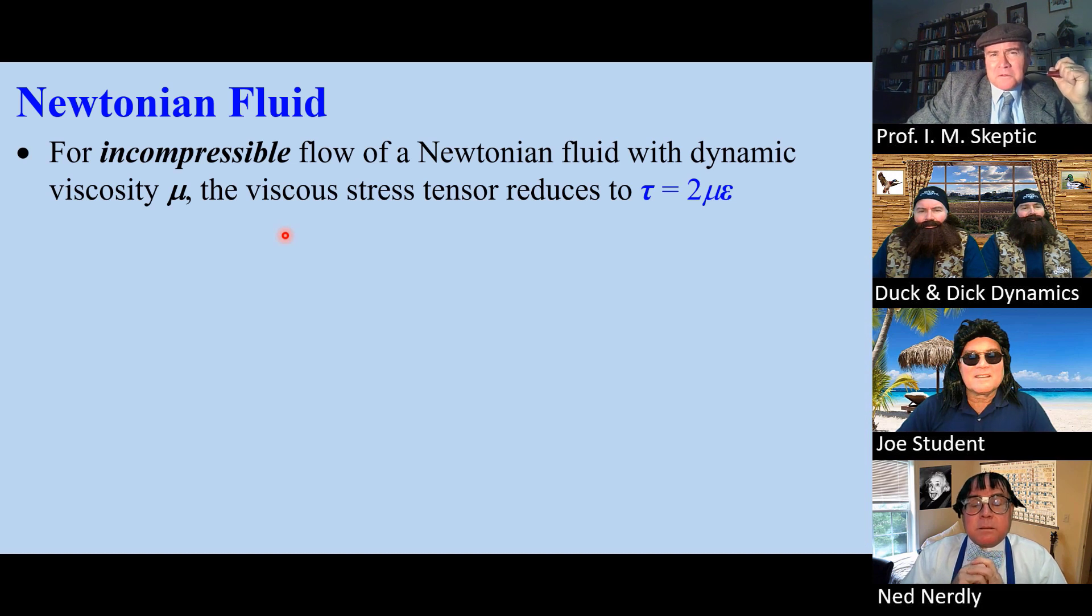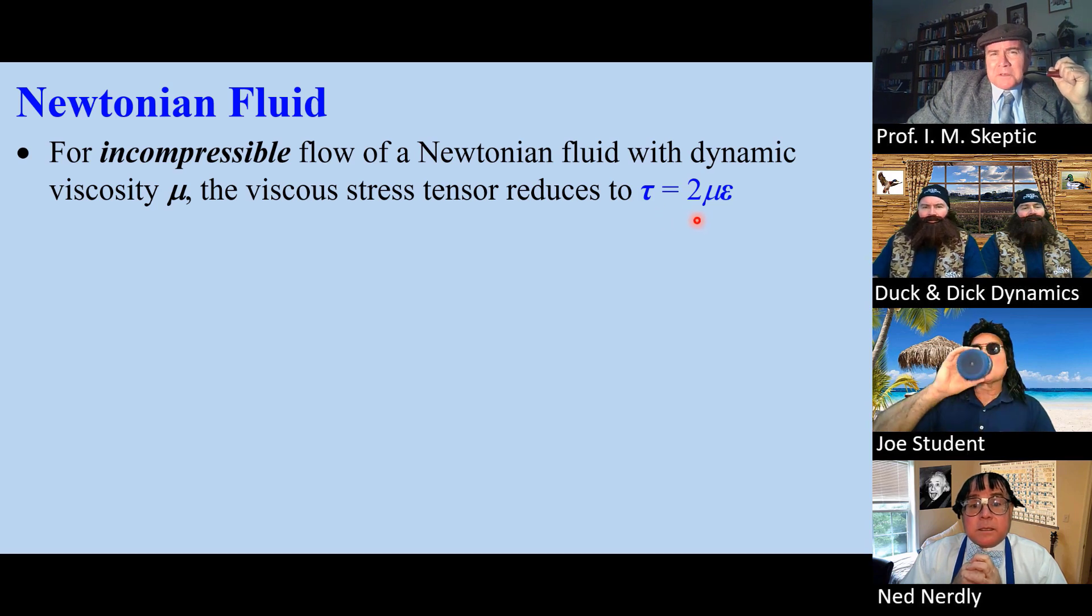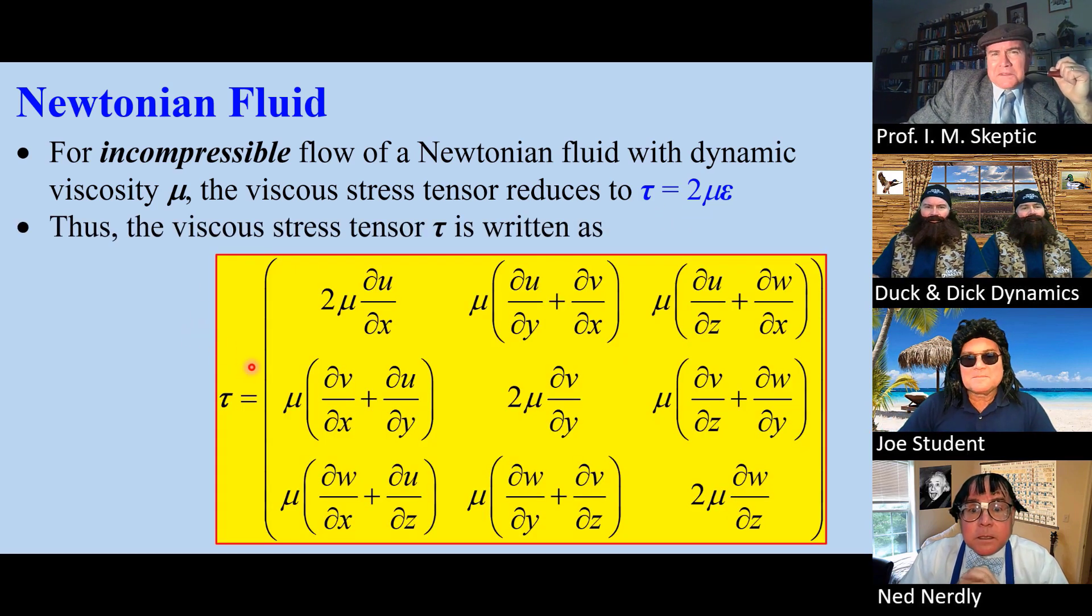For incompressible flow of a Newtonian fluid, with dynamic viscosity mu, the viscous stress tensor reduces to tau equal to mu times epsilon. When we plug epsilon from the previous slide, we get this expression for tau, the viscous stress tensor.